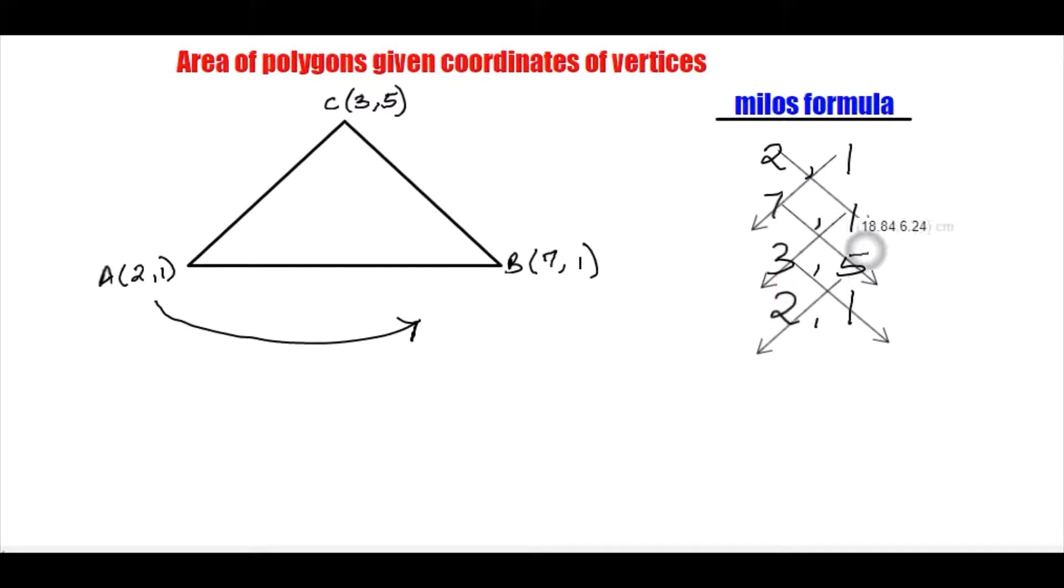So once I do this, these arrows are guiding me to see the numbers I'll be multiplying. So if I multiply 2 times 1, this will give me a 2. I can write it there. 7 times 5, this will give me a 35. 3 times 1, this will give me a 3.